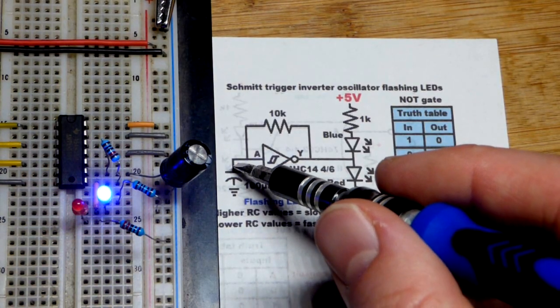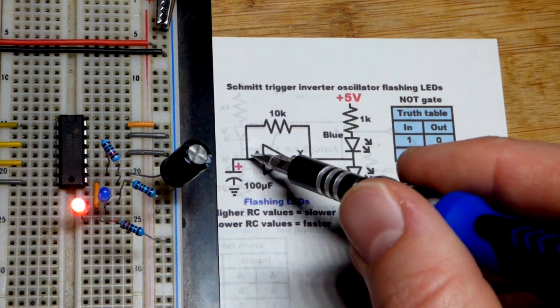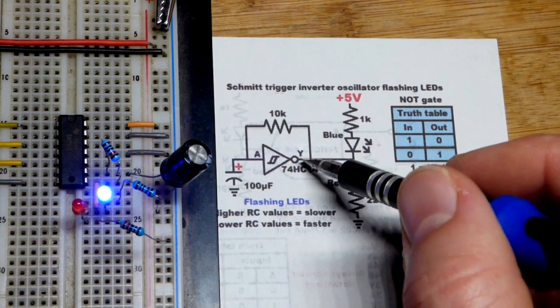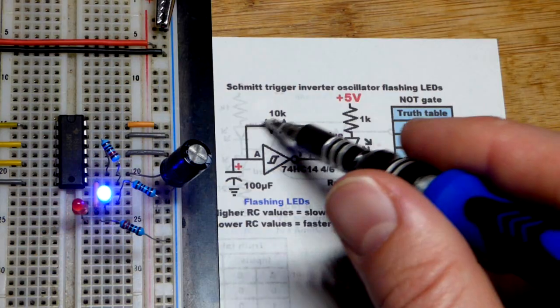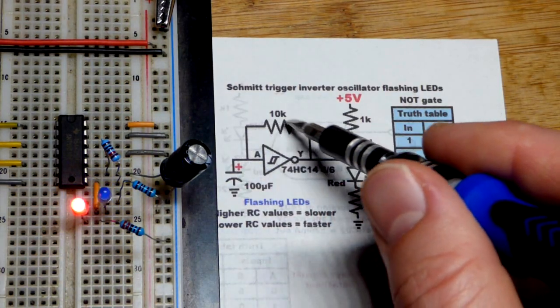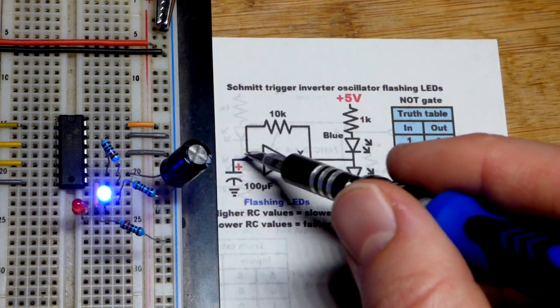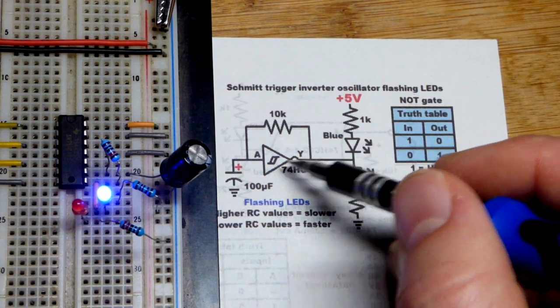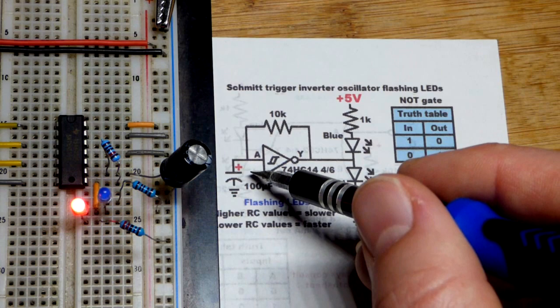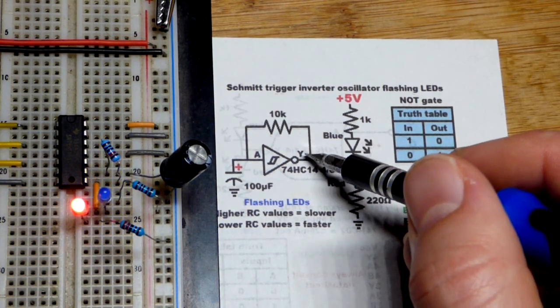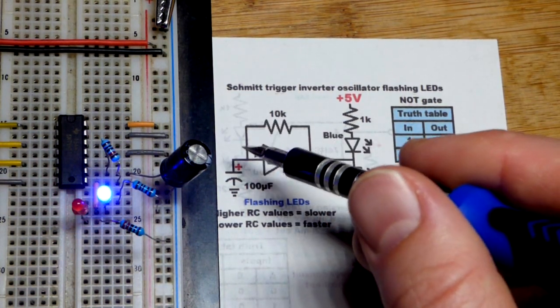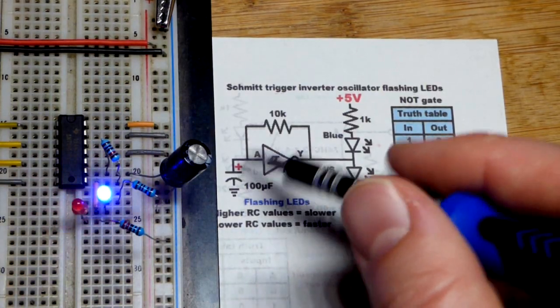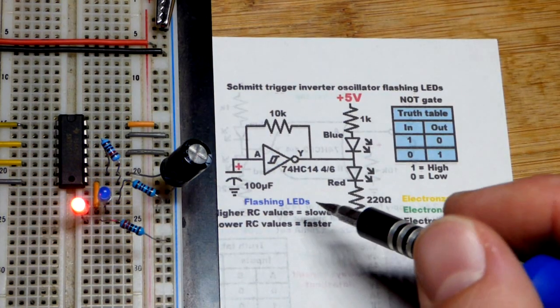When the capacitor charges enough, that's a high enough voltage, output is low. Then you can see that we got a connection to ground right there, and the capacitor just charges through that resistor until its voltage is low enough to set the output high. And then again, the output's high, so it starts charging the capacitor, and that's how this process goes.